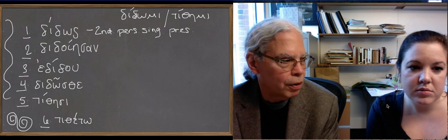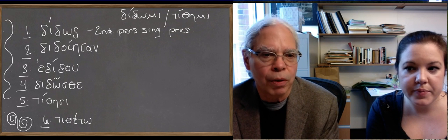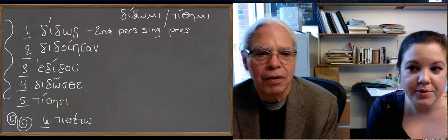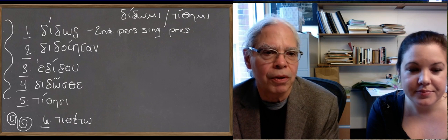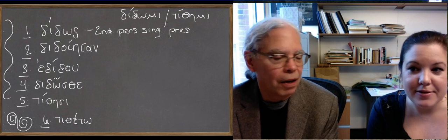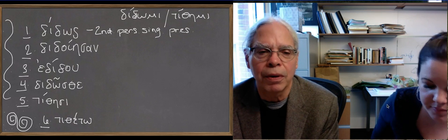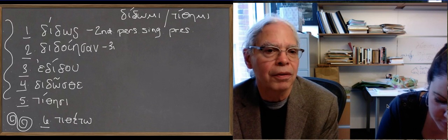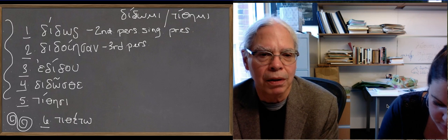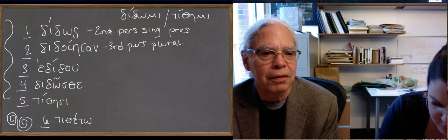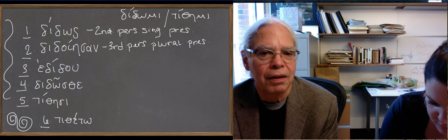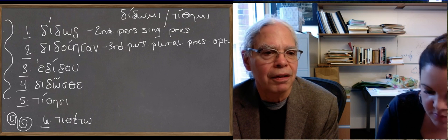We've seen this σαν ending before, but we mentioned it as one of the characteristics of the athematic verbs. So what person is that? Third person plural of a secondary ending. And what's the ιη? Optative. Which always has secondary endings. So there's your third person plural of the present, so-called present optative. It's the optative of the imperfective aspect.